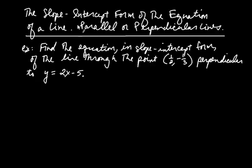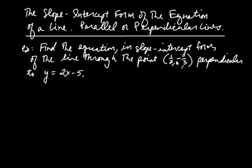Here we're going to find the slope-intercept form of the equation of a line when we have a line that's parallel or perpendicular to some other line. For example, let's find the equation in slope-intercept form of the line through the point one-half, negative one-third, perpendicular to the line y equals 2x minus 5.